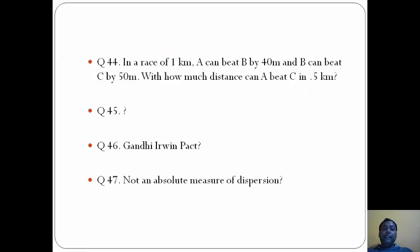In a race of 1 kilometer, A can beat B by 40 meters and B can beat C by 50 meters. With how much distance can A beat C in 5 kilometers? The answer here is D, 45 meters. A beats B by 40 meters, B beats C by 50 meters, so the distance between A and C is 40 plus 50 equals 90.